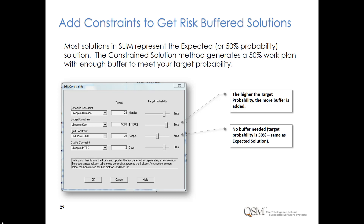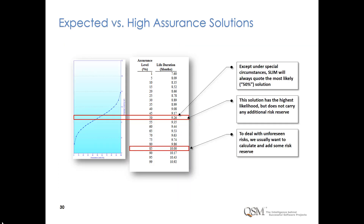Most solutions in SLIM represent the expected or 50% probability, but you can add constraints to get risk-buffered solutions. The constrained solution method generates a 50% work plan with enough buffer to meet your targets at the desired probability. For example, even though we calculate that a project can be completed in 9.26 months, we commit to the customer to deliver in 10 months. This gives us about 3 calendar weeks of reserve to respond to risk. Without this risk reserve, the moment one problem compromises the schedule, we are in danger of overrunning and not fulfilling our commitment.